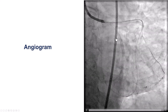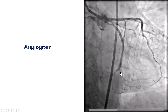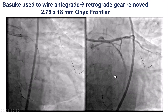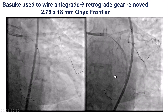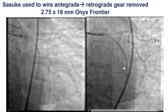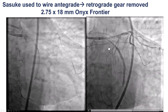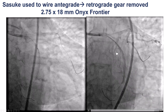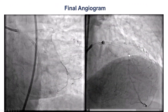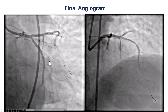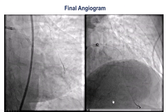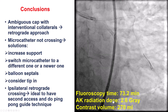This provided a nice result with TIMI 3 flow into the circumflex. There is some diffuse disease proximally and distally, likely due to distal underperfusion over a long period. We placed an additional stent to cover the circumflex, achieving a nice final result with TIMI 3 flow. The septal collateral was checked, and there was no injury.